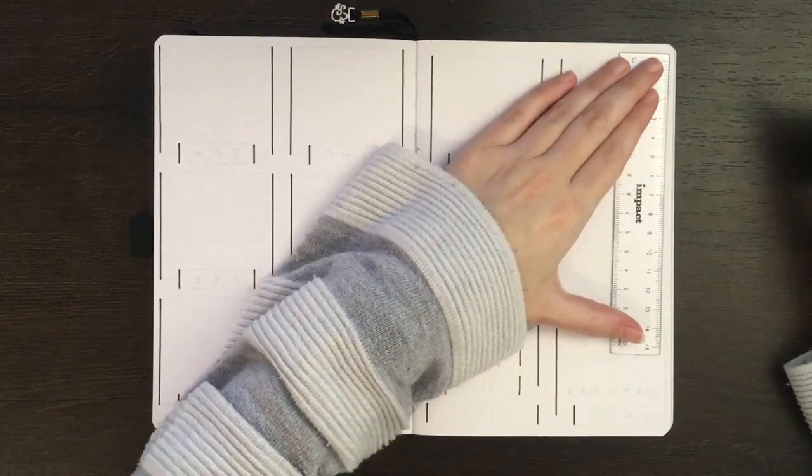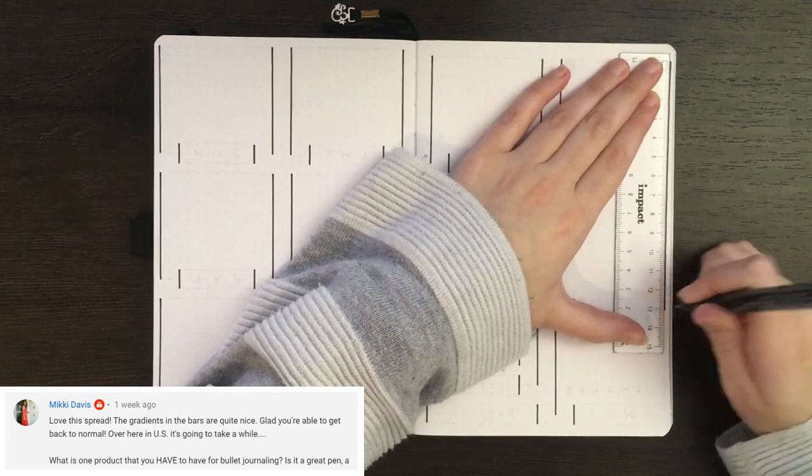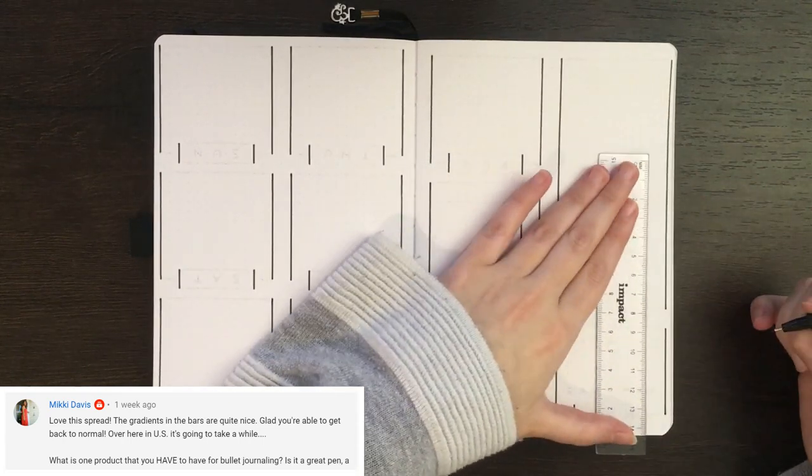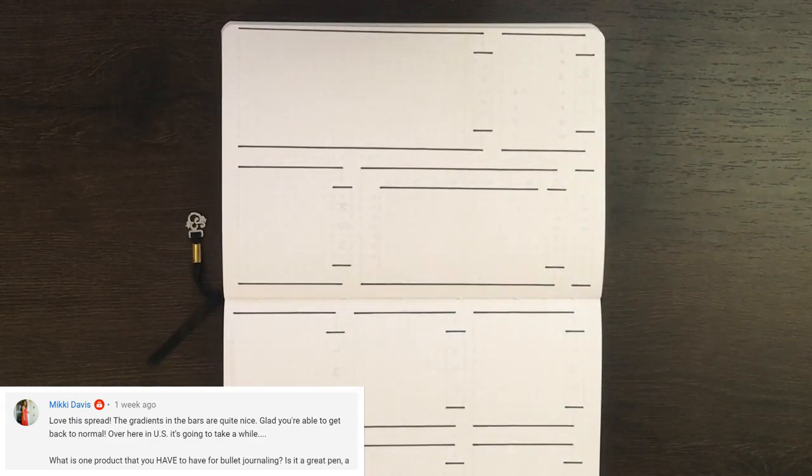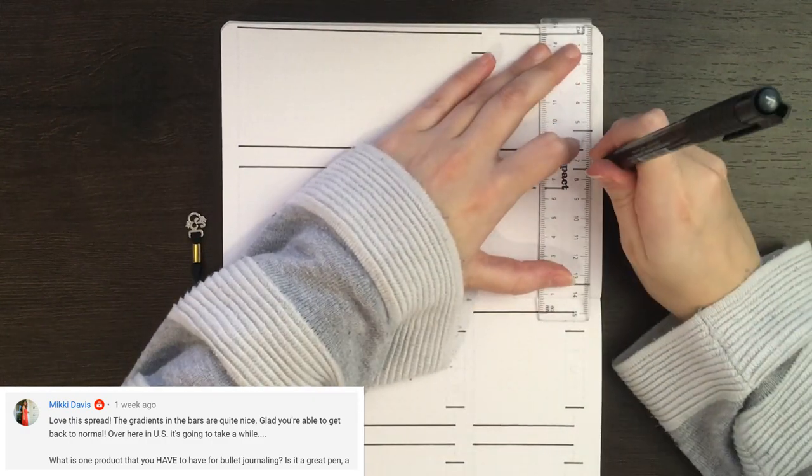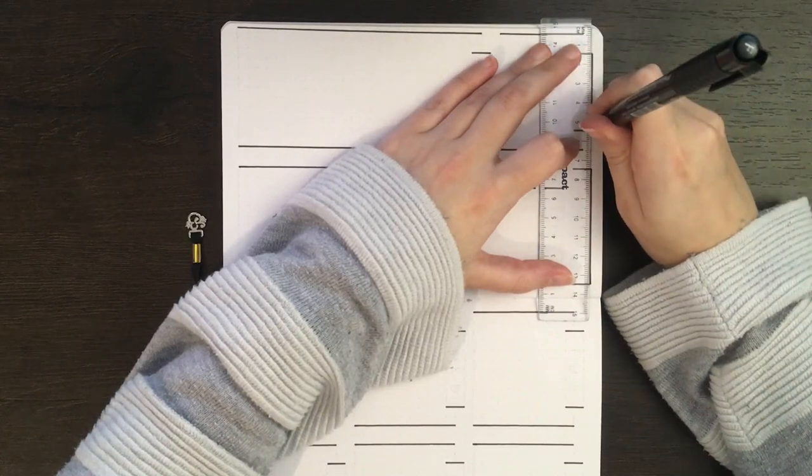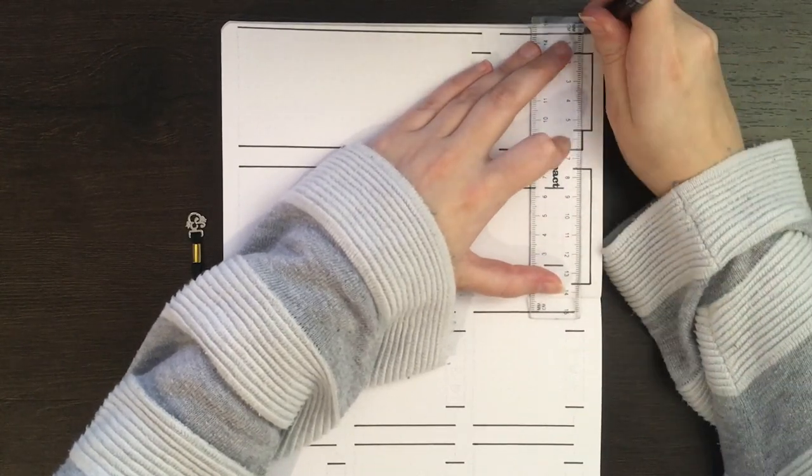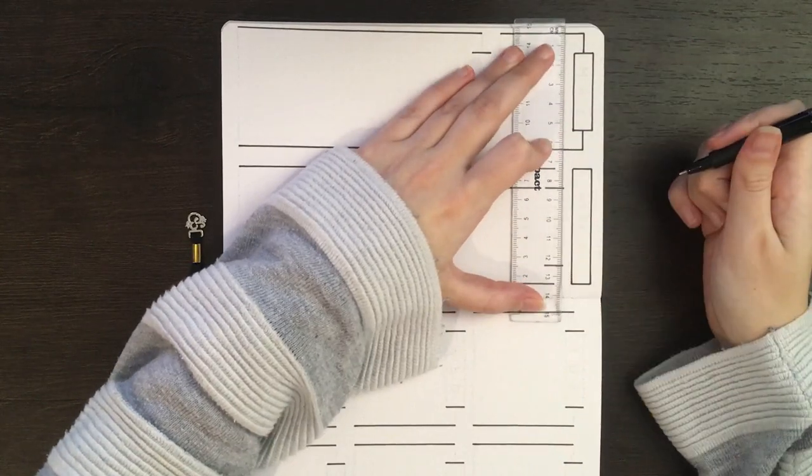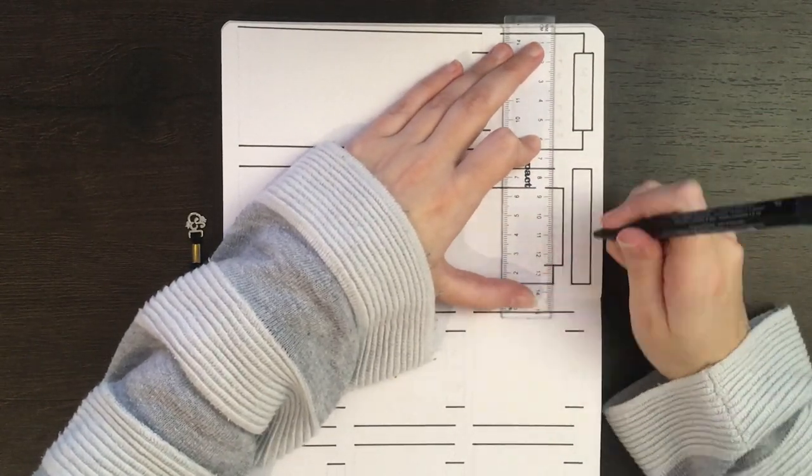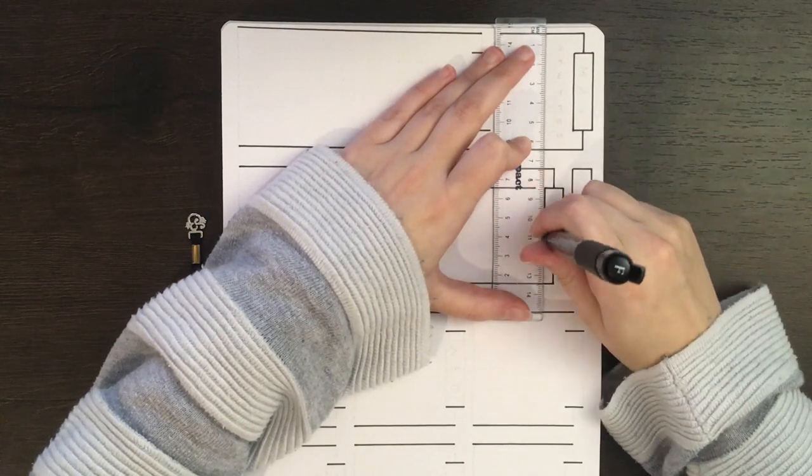Our next question comes from Mickey Davis, and their question was, what is one product that you have to have for bullet journaling? Is it a great pen? A certain type of journal? Thoughts? For me personally, it would have to be a journal with quality paper. I'm totally fine using pens that aren't great quality, but if the paper quality of the journal I'm using is poor, that would really get to me.